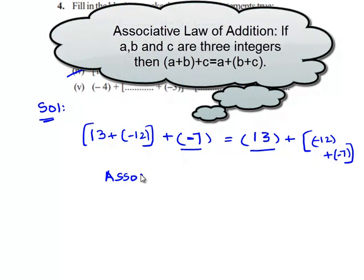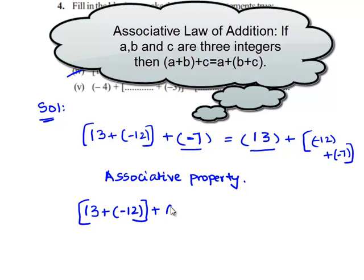This is because of the associative property of the addition of integers. That is when 13 and negative 12 and negative 7 are added in any order we get the same value. We will check it. First, we will take [13 + (-12)] + (-7).